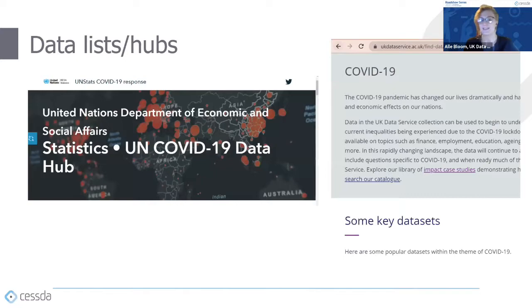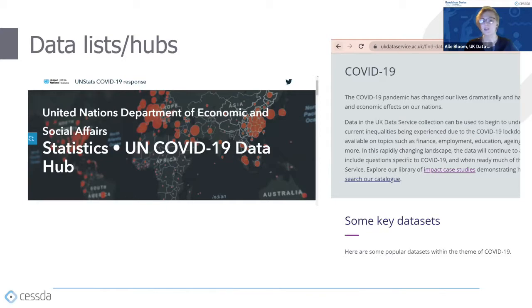Another place to look is a data list or data hub. Data hubs are themed pages that bring together datasets on a particular topic. For example, if you were looking for COVID-19 data, you might consult the UK Data Service's COVID-19 theme page, which brings together popular key datasets on that theme. Or you might look at the United Nations COVID-19 Data Hub, which brings together national response data and geospatial data, designed for easy download in multiple formats for maps and visualisations.